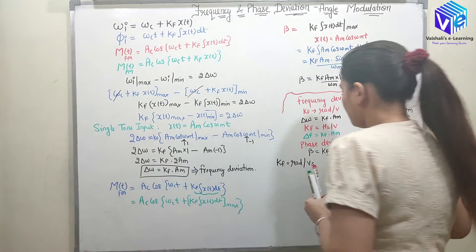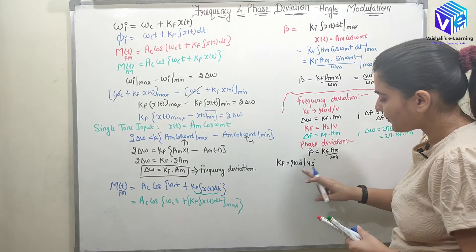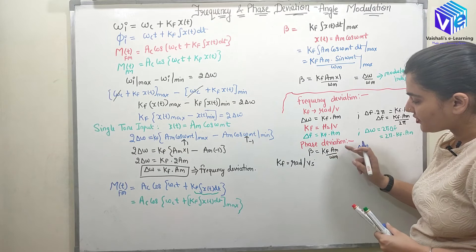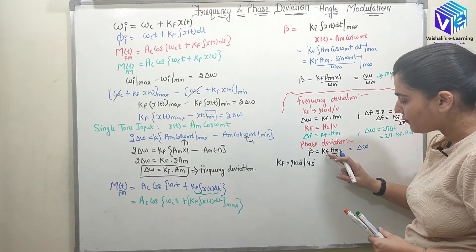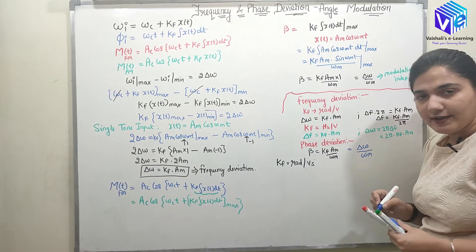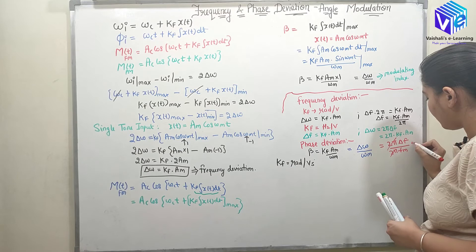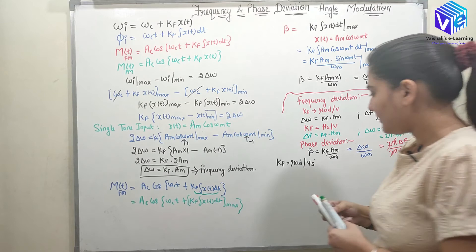When the unit of k_f is in radians per volt, k_f times A_m gives delta_omega, since radian/volt multiplied by volt gives radians. Then beta = delta_omega / omega_m. Since delta_omega = 2*pi*delta_f and omega_m = 2*pi*f_m, this simplifies to beta = delta_f / f_m.